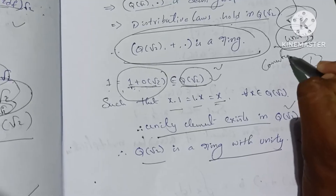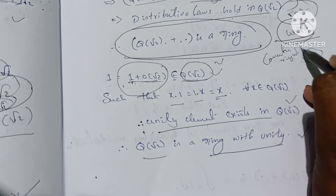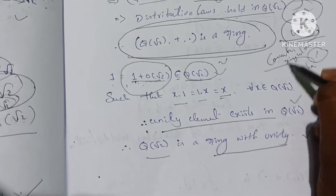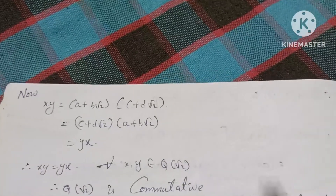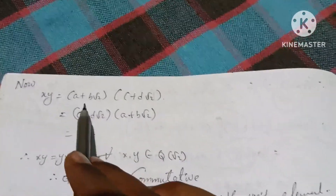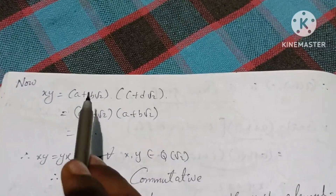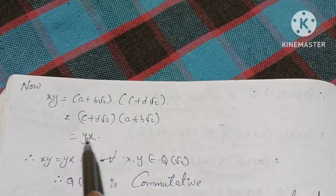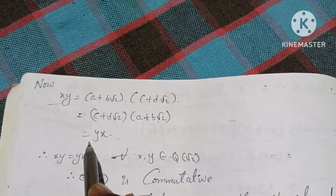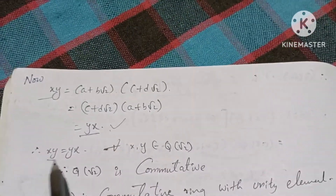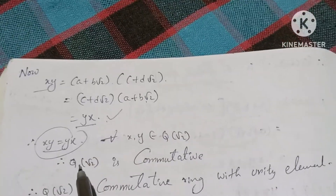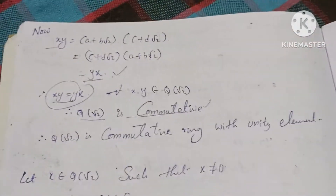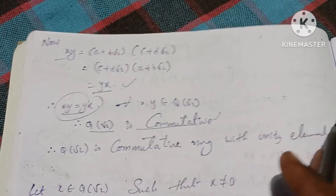Commutative ring with unity. For commutativity of multiplication: x times y equals (a plus b root 2) times (c plus d root 2). Expanding gives the same value as y times x. So x times y equals y times x. Therefore Q(√2) is commutative, and Q(√2) is a commutative ring with unity element.